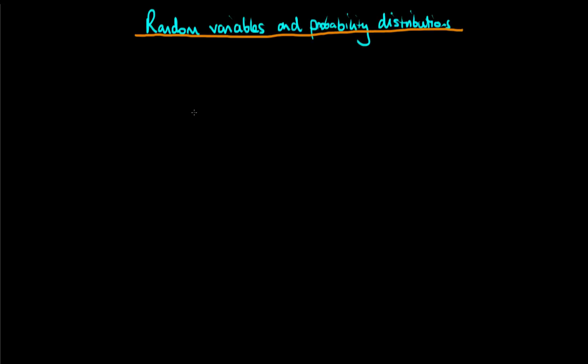In this video, I want to explain what we mean by random variables and probability distributions. To explain the concept of a random variable, I'm going to use a particular example to do with tomorrow's weather. By the very nature of the fact it's tomorrow, we are uncertain about what the weather will be. Any time we are uncertain about something, we describe that uncertainty using probability distributions.